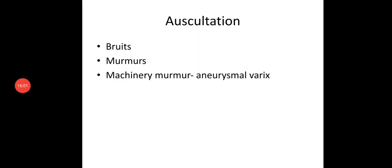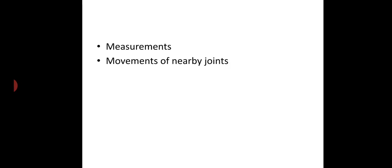Next, auscultation — look for bruits and murmurs. For example, a machinery murmur is heard in aneurysmal varix. Next, measurements and movements of nearby joints.